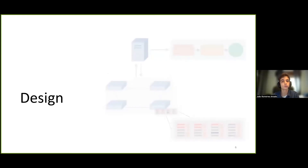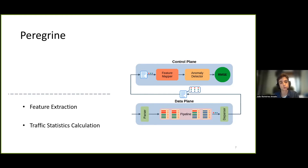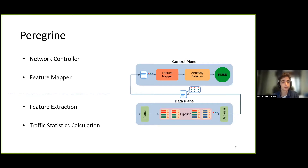I'll now go over the overall design of Peregrine and describe some challenges we've encountered on the data plane implementation. The Peregrine framework moves part of the intrusion detection pipeline to the network data plane. Specifically, at the data plane level we have two components. For each packet that arrives at the switch, we perform feature extraction to store and update a number of traffic counters, and we use these values to calculate almost 100 statistics to measure the network's traffic behavior. These measurements are periodically sent to the control plane in a proactive fashion, where Peregrine's controller then feeds them as input to a machine learning pipeline. A final anomaly score is then obtained for each particular set of measurements sent by the switch.